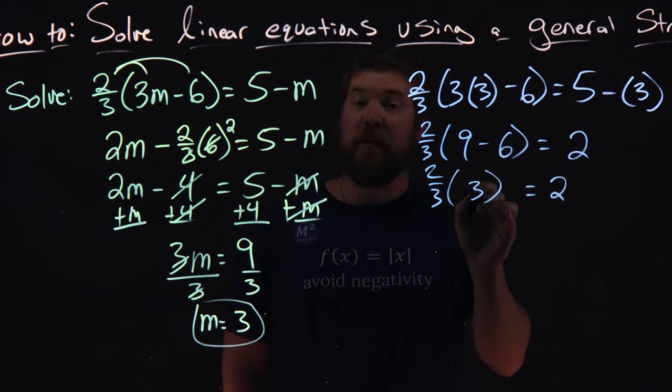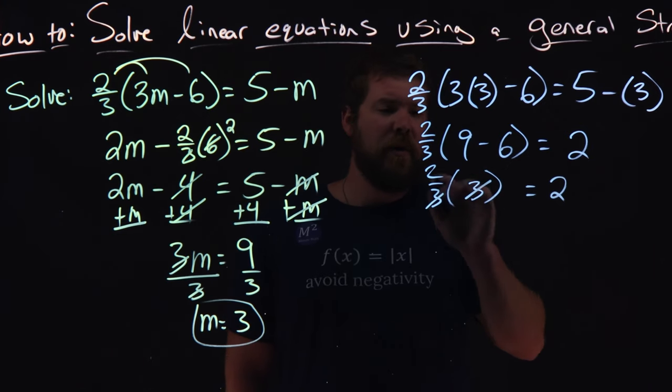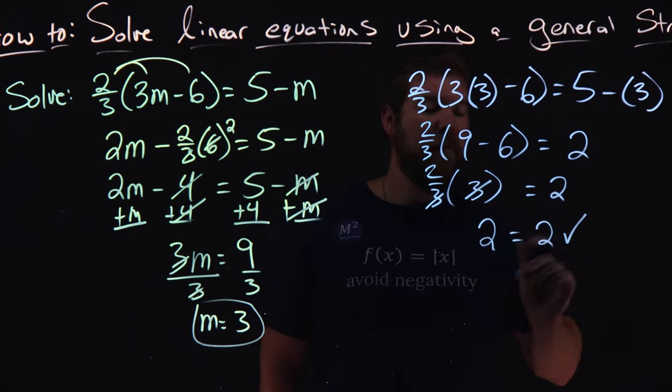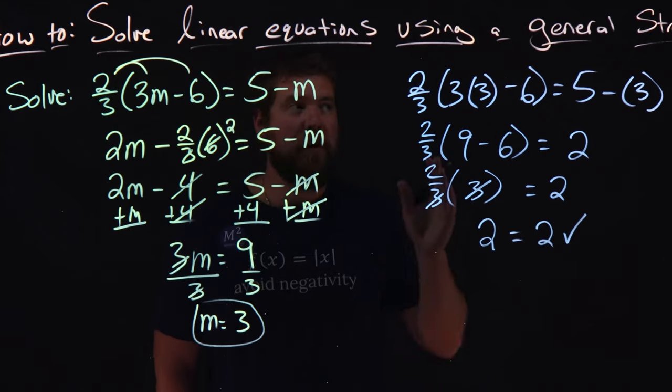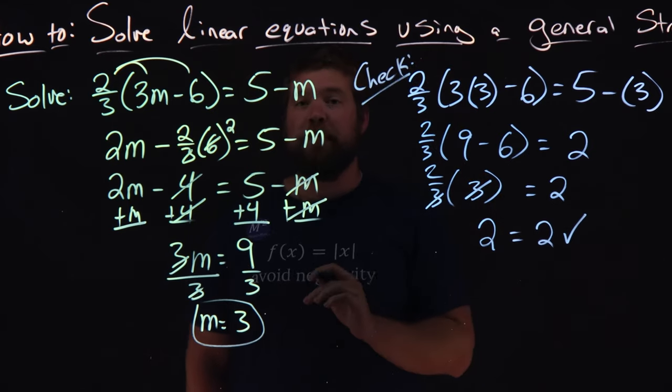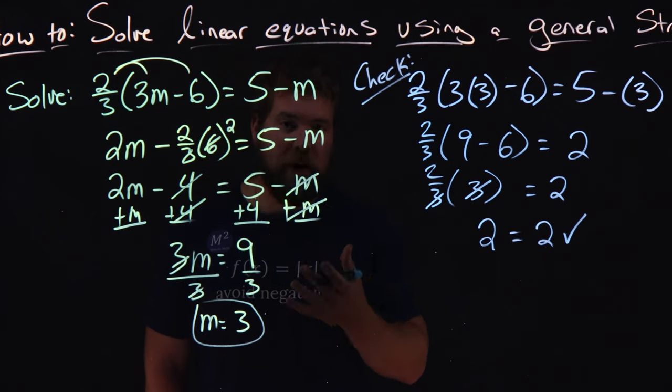2 thirds times 3, the 3s cancel, and we're left with just the 2. And we see 2 is equal to 2, meaning that 3 was a solution to our equation, so our check worked out. So again, 3 is our final answer here.